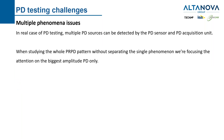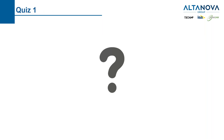The second common issue is related to multiple PD phenomena. In real PD testing, multiple PD sources can be detected simultaneously by the PD sensor and acquisition unit. When studying the whole PRPD pattern without separating individual phenomena, we focus only on the highest-amplitude partial discharges and miss the lower-amplitude ones.